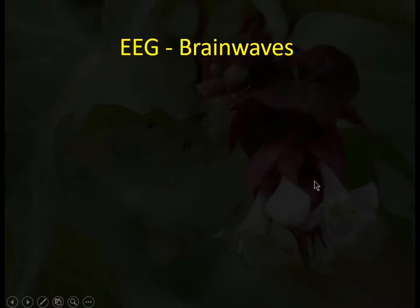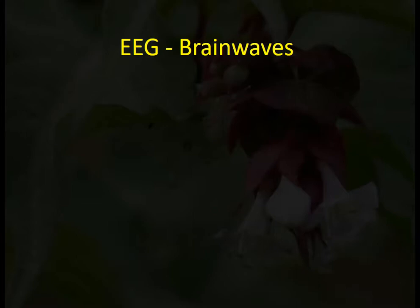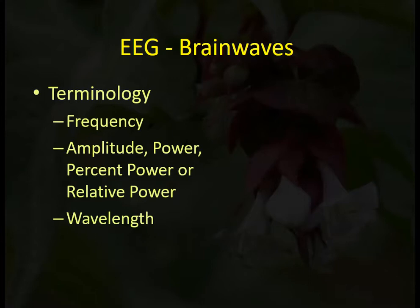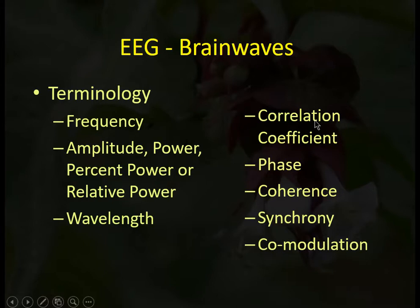Now let's talk about EEG brainwaves and the terminology we use. Key terms include frequency, amplitude, power, percent power or relative power — which mean the same thing — wavelength, correlation coefficient, phase, synchrony, coherence, and comodulation.